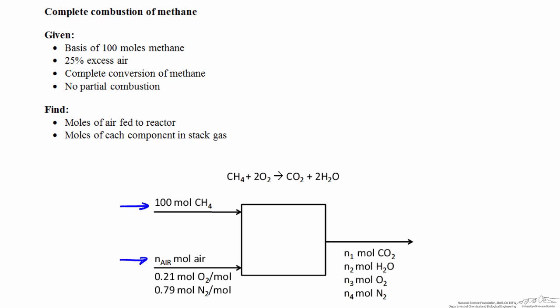We know that air is 21% oxygen and 79% nitrogen by mole. The last two pieces of information given tell us something about what's happening inside the reactor and influence what we would expect to see in the stack gas. We know there's complete conversion of methane, so we won't find any methane in the output. We also know there's no partial combustion, so we wouldn't expect to see any carbon monoxide in the output. This implies that all methane is combusted via complete combustion, and the reaction is shown below.